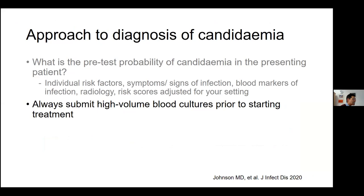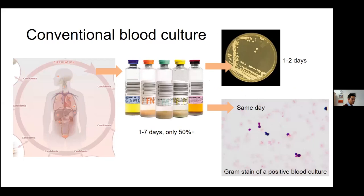The next step is to submit high-volume blood cultures prior to starting treatment — the gold standard for diagnosis. However, sensitivity is relatively low, only around 50% when compared to autopsy series. Another problem is delayed time to positivity: positive blood cultures may flag only after one to seven days. A Gram stain is available on the same day, but culture and identification take another one or two days, and conventional susceptibility testing another one to two days. By the time you know the antifungal susceptibility results, you're probably a week down the line.